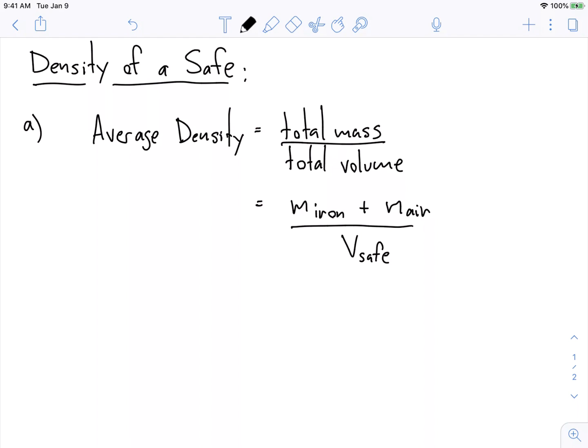So one thing that we're going to do for this problem is just assume that the mass of the air is zero. It's not actually zero, but it's way less than the mass of all the iron in the safe, right? So we're just going to assume that's equal to zero.